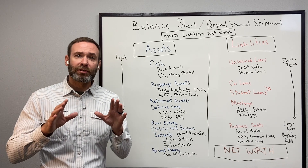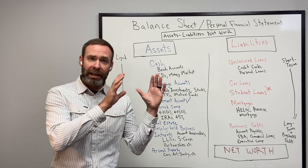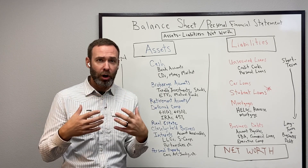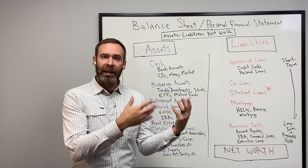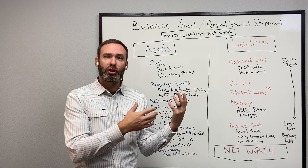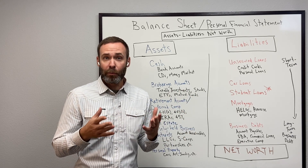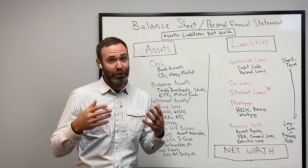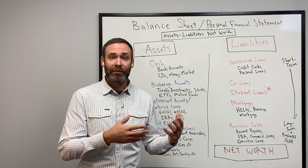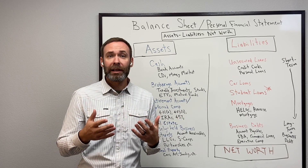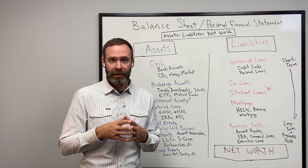A balance sheet follows the simple formula: you take your assets — what you own — minus your liabilities — what you owe — and the difference is net worth. Net worth may be positive, or net worth may be negative. It all depends on what season of life we're in.